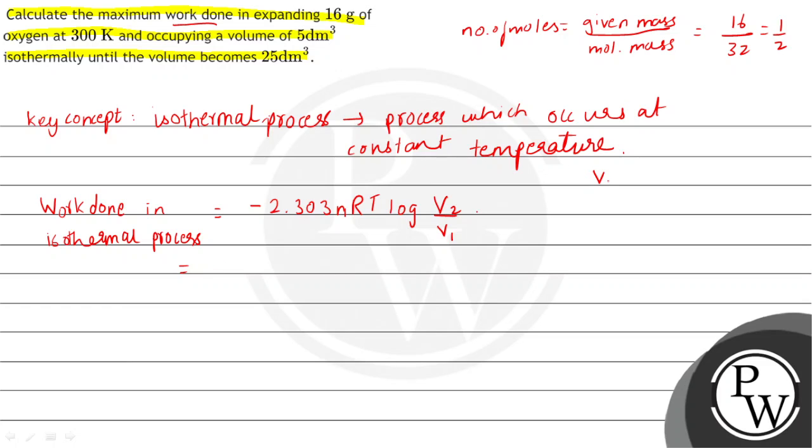We have V1 given to us as 5 dm cube which is also equal to 5 liters. And we have V2 given to us which is equal to 25 dm cube which is also equal to 25 liters.